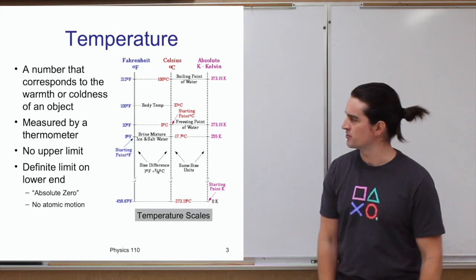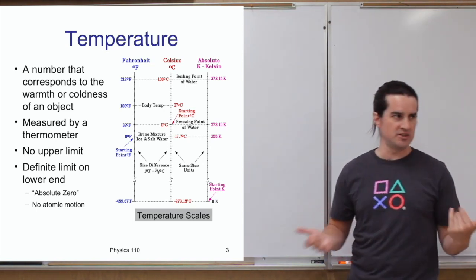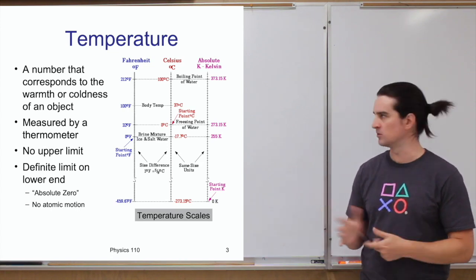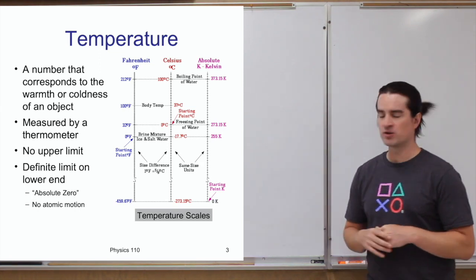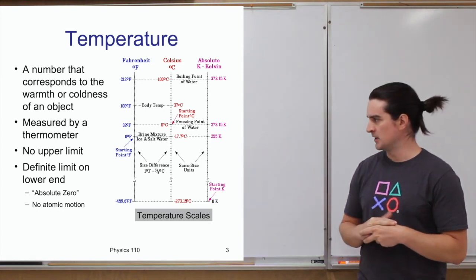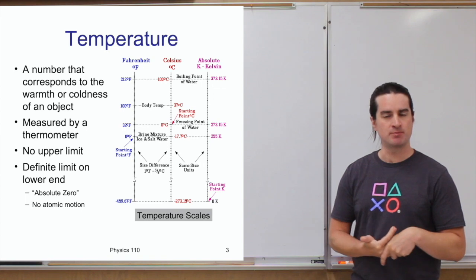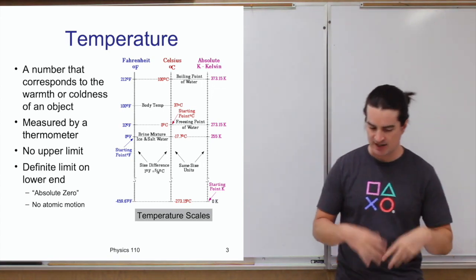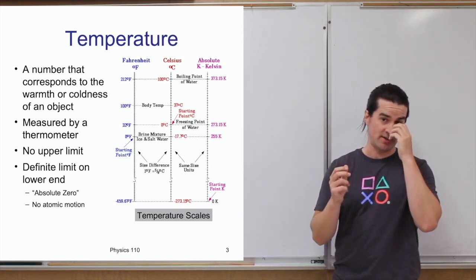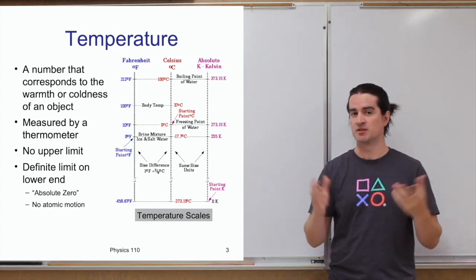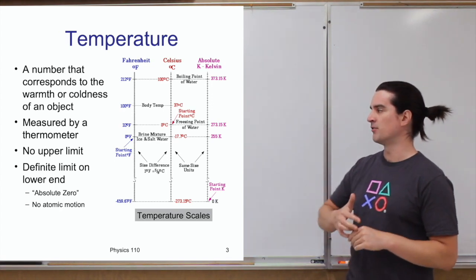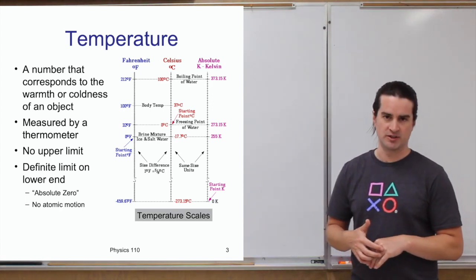In a more day-to-day sense, temperature is just a measure of how warm or cool, how hot or cold something is. In physics, temperature is something you can measure with a thermometer. There appears to be no real upper limit to temperature — atoms can just move faster and faster, probably all becoming plasma at some point. However, there is very much a lower limit on temperature.